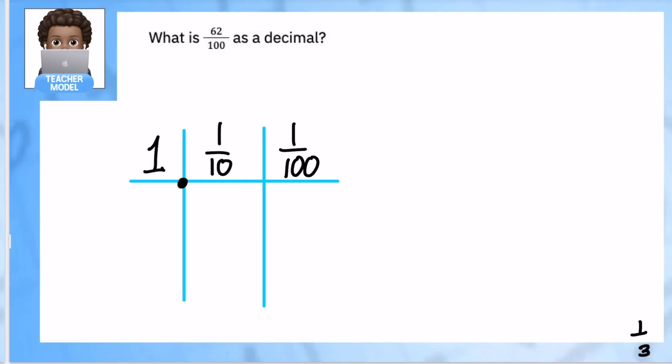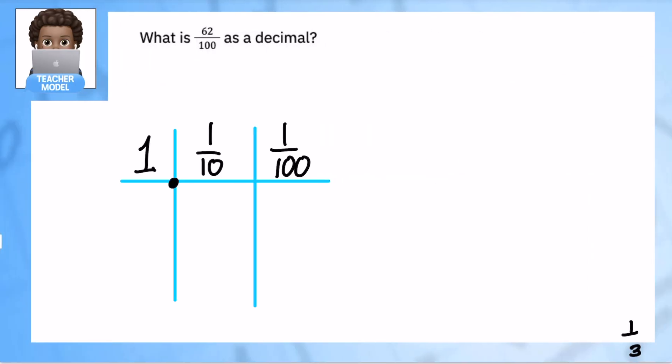So let's look at our first example: what is 62 over a hundred as a decimal? The great thing about this is that I can also use this to say its name correctly. So 62 over a hundred or 62 hundredths. It's almost like my numerator is the first name and my denominator is the last name.